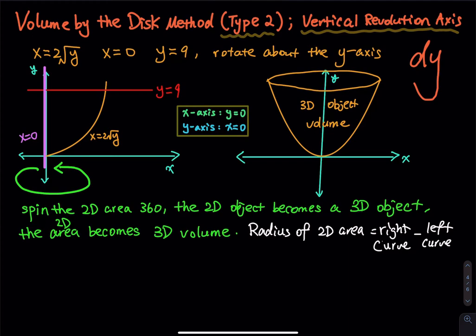This is very important: x = 0 is the y-axis, and y = 9 is a horizontal line. We can see a region bounded by these three curves — x = 0, y = 9, and x = 2√y. We then rotate about the y-axis, spinning this area 360 degrees to get a volume.